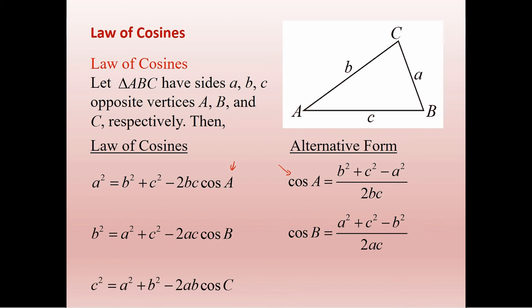The C squared equals A squared plus B squared minus 2AB cosine C, or the alternate form cosine C equals A squared plus B squared minus C squared over 2AB.